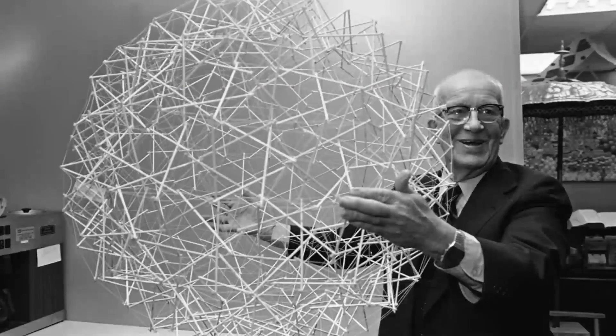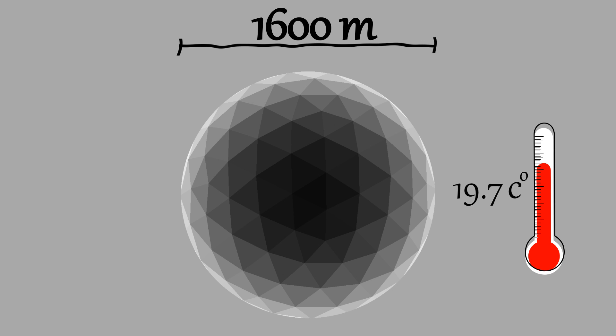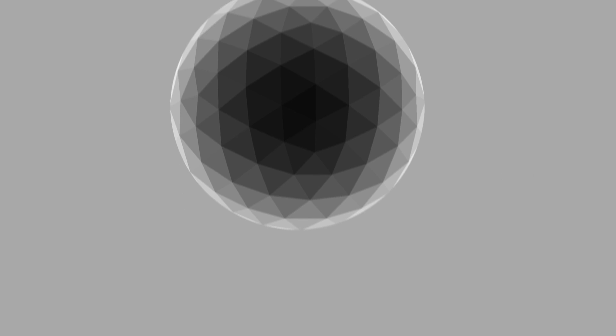119 years ago a genius was born — Buckminster Fuller. His idea went something like this: make a sphere one mile in diameter to completely enclose the air inside, warm that air by a few degrees Celsius, and then sit back and let the whole sphere float up high. That's it.